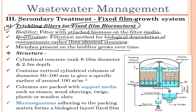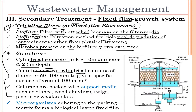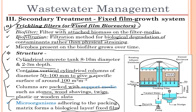Microbes present on the biofilter grow over time and have some structural definition. It has a cylindrical concrete tank of about 8 to 60 meter diameter with a depth of about 2.5 meters. It contains vertical cylindrical columns of diameter 50 to 100 millimeters to give a specific surface of around 100 square meters. These columns are packed with support media such as stones, wood shavings, twigs, plastics, or wooden slats. Microorganisms adhering to the packing matrix form a biological layer.